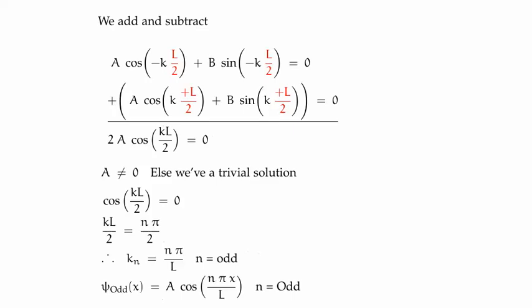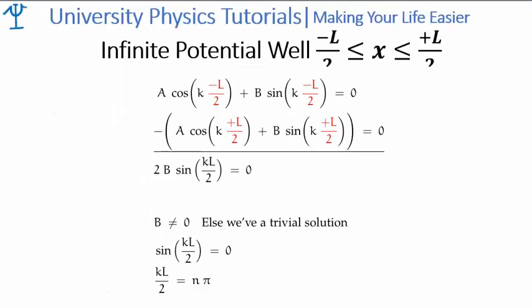And now we take the subtraction of the simultaneous equations. If we subtract the two expressions we get a very similar result: twice B times the sine of kL over 2 must be zero. Once again we look at the non-trivial solution such that B is non-zero.